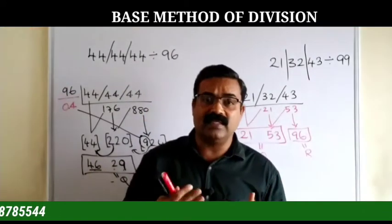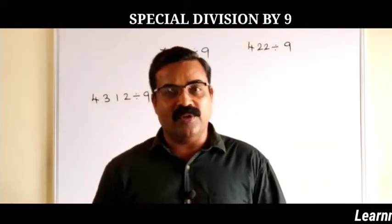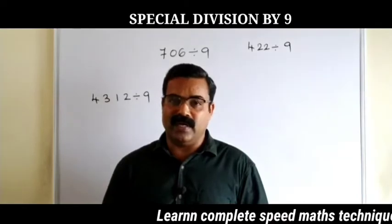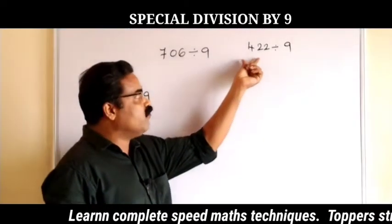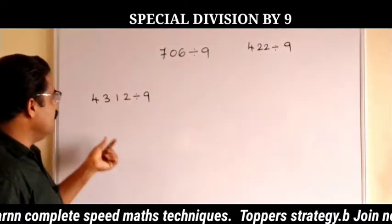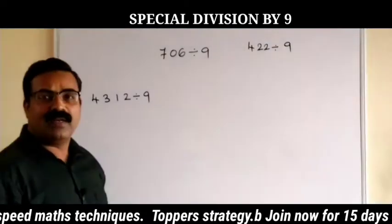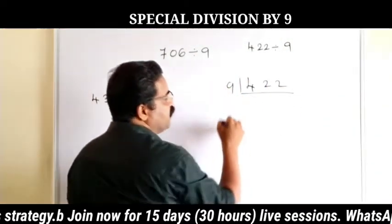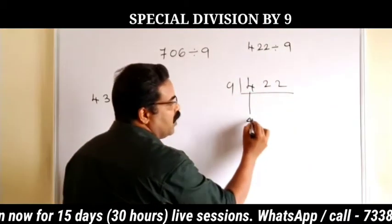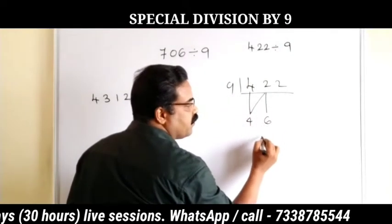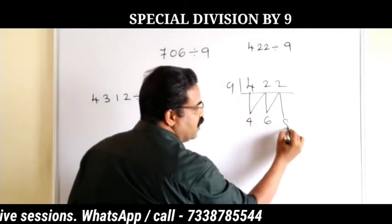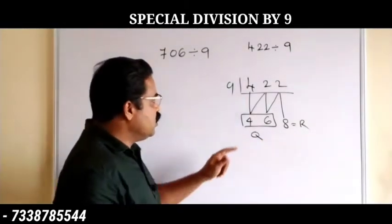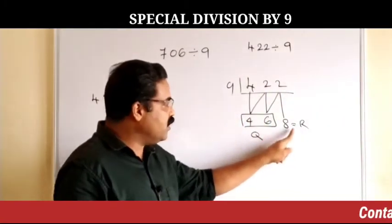This method of division is called the base method of division. Now we are going to see a special division by 9 — how to divide any given number by 9. For example, 422 divided by 9. The method is: write 4 first, then 4 plus 2 is 6, then 6 plus 2 is 8. The first part is your quotient and the last part is your remainder. So 46 is the quotient and 8 is the remainder.